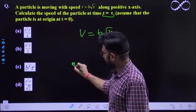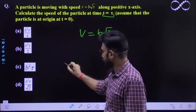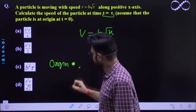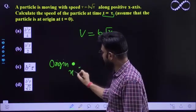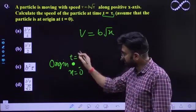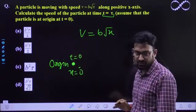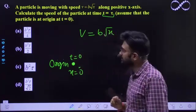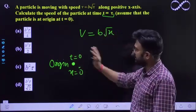Iska matlab agar woh origin se ek particle start hua hai this is origin. Thik hai origin pe x zero hoga, ye t zero hoga tabhi woh start hua hai. Iska matlab at t equal to zero pe woh origin se start hua hai. So jab t equal to zero hota hai to x equal to zero hota hai. Yeh humain find out already dharekha hai, given hai.